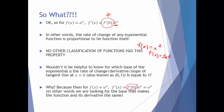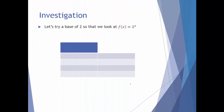We're going to investigate what that might look like. I'm going to try a base of 2 — 2 is a nice small number and the numbers shouldn't get too large. I'm going to look at f of x equals 2 to the x and see if possibly this is the base for which f prime of 0 equals 1.